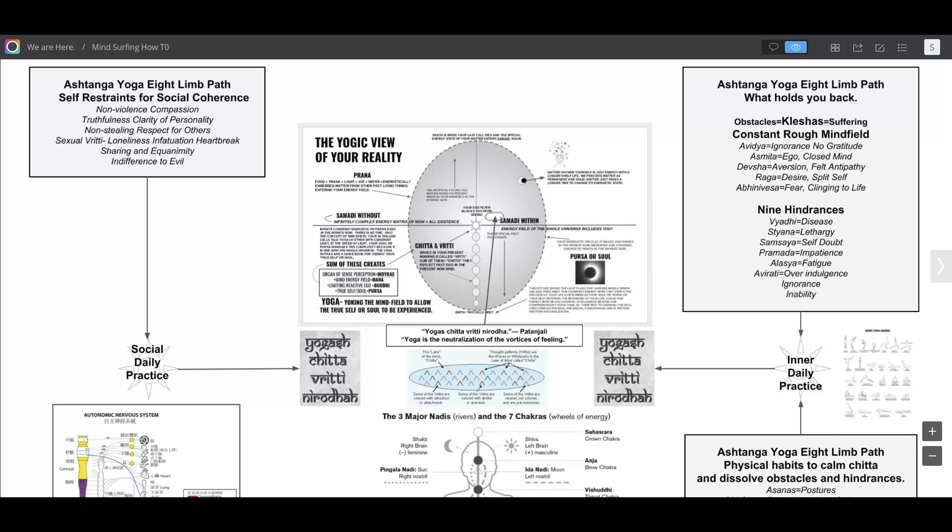There are also nine hindrances in terms of getting that pond to quiet down, and that is disease, lethargy, self-doubt, impatience, fatigue, overindulgence, which a lot of us do, ignorance, and inability. With the hindrances and the rough minefield created by past egoic energy in the present, you definitely need daily inner practice.